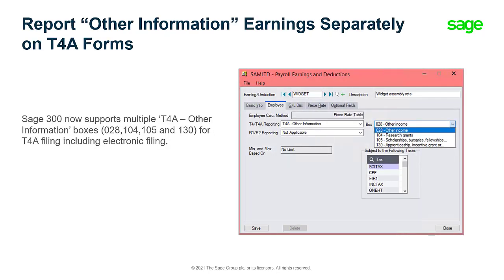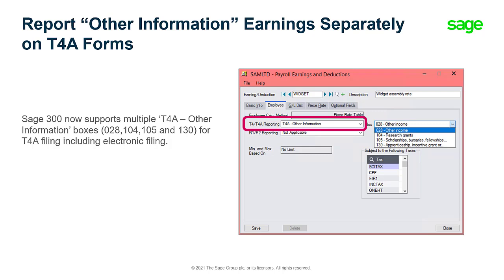On T4A forms, each of the supported types of Other Information Earnings is now reported in its own box. By default, all existing Other Information Earnings are set up to be reported in Box 028, Other Income. If you have Other Information Earnings that should be reported in other boxes, you must set up these earnings by specifying the correct box in the New Box field on the Earnings and Deduction screen. The New field appears only if you select T4A Other Information in the T4/T4A Reporting field.